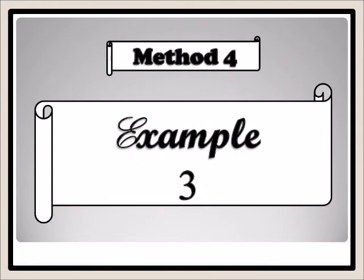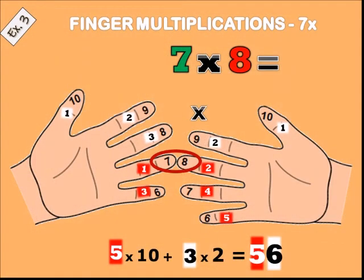Example three: seven times eight. Place the ring finger and the middle finger together, then count down: one, two, three, four, five — five times ten is fifty. On the left hand there are three fingers remaining and on the right two fingers, so three times two is six. Fifty plus six equals fifty-six. Seven times eight equals fifty-six.